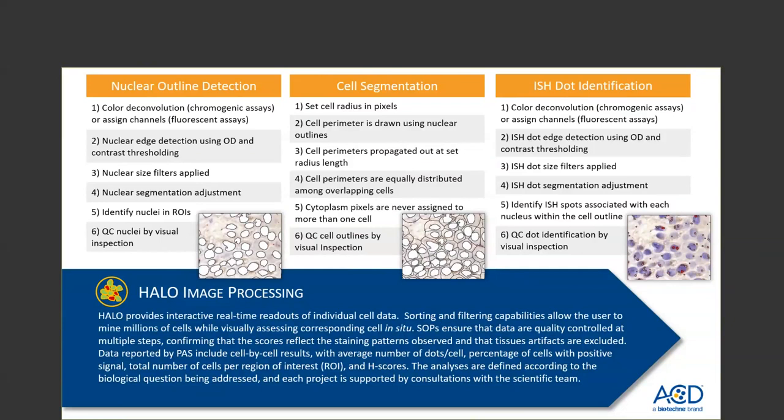Halo analysis requires input from our expert scientists for nuclear outline detection, followed by optimal cell segmentation, and appropriate ISH-dot identification. It is very important that we do not under-detect or over-detect any of these parameters. For nuclear outline detection, we use color deconvolution for cell segmentation, with the nucleus considered a landmark for drawing the cell perimeter. For each dot identification, if you have signal in the form of clumps, Halo is able to segment that signal into individual dots. With Halo image analysis, you can get the exact number of dots in each cell — not just categorization into bins. For example, a cell with 28 dots will be categorized as score four, but with Halo analysis you also retain that precise dot count information.